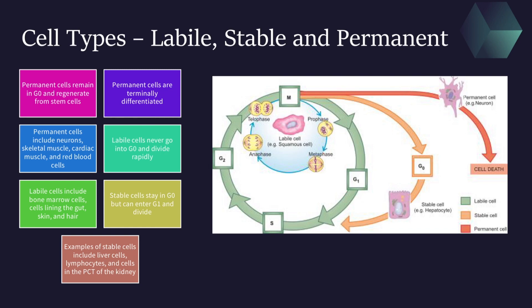It's important to note that permanent cells are still performing their job. For example, neurons will still conduct signals, and muscle cells will still contract. The most important thing to remember is that permanent cells are not able to regenerate on their own, but they can regenerate from stem cells. For example, red blood cells live for about 120 days, and your body makes more using stem cells in the bone marrow.